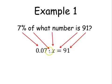Since we are multiplying both sides by 0.07, we are going to divide both sides by 0.07. And that will cancel out the 0.07s on the left hand side, leaving us with just x. And then we have 91 divided by 0.07.